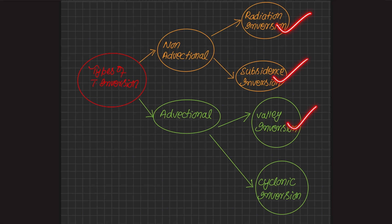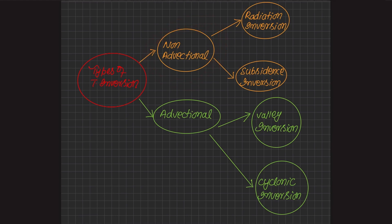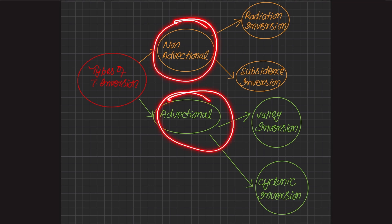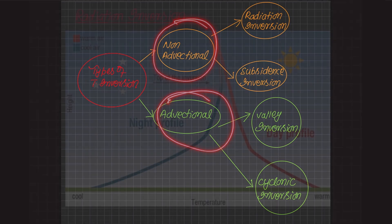Advectional means the transport of a property or substance by fluid's bulk motion — for example, wind carrying heat or pollutants from one place to another. Non-advectional means the property or substance is not being transported by bulk motion of a fluid; it could be due to other processes like diffusion, radiation, or chemical reactions. In non-advectional type no wind is involved, whereas in advectional type wind is involved and helps transfer heat from one surface to another.